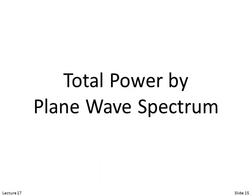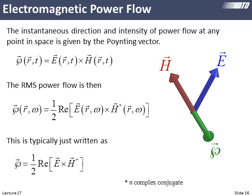Now for the actual way we'll calculate transmission and reflection — by the plane wave spectrum. We'll calculate how much power is in each diffraction order on the reflected and transmitted side and then add them all up. We start with the instantaneous Poynting vector E cross H, but really we're interested in the RMS power flow, which is a frequency domain concept: one-half times the real component of E cross H*, where we take the complex conjugate of H.